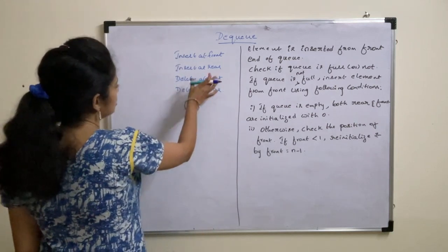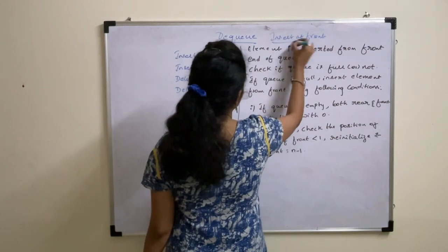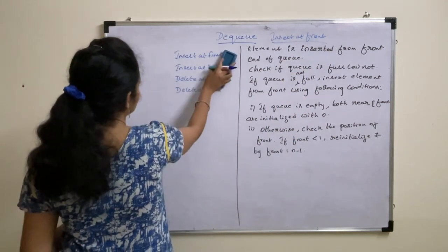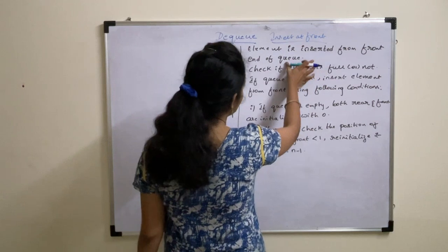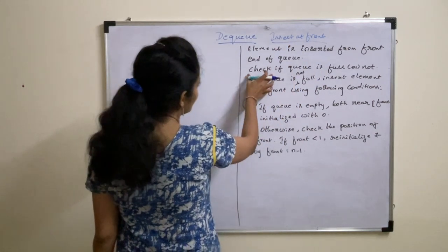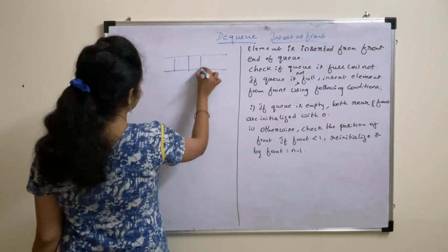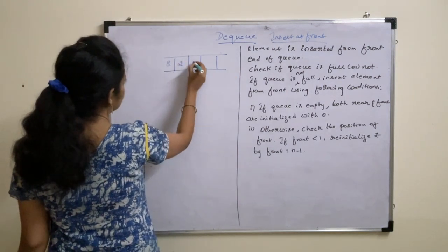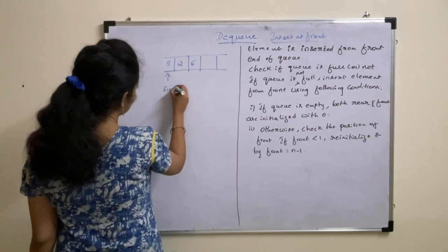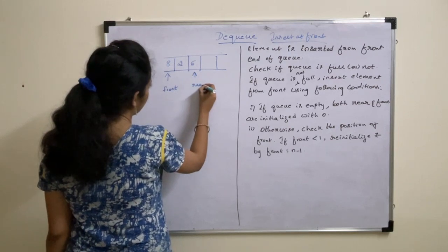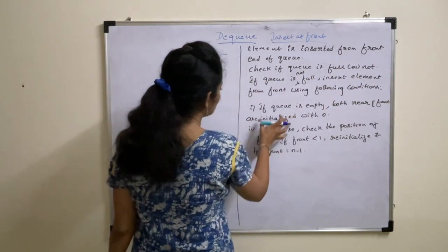We will now see insert at front and the steps required for performing this operation. This element is inserted from the front of the queue. So we are going to insert from the front. First, check if the queue is full or not. For example, this is your queue, and here the queue is not full. If the queue is not full, insert the element using the following two conditions.